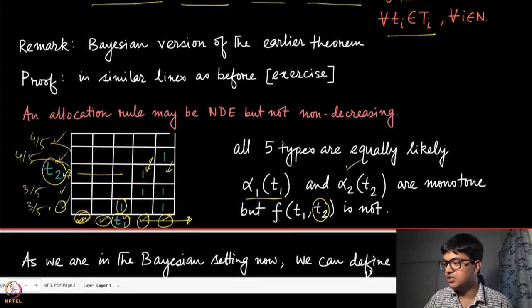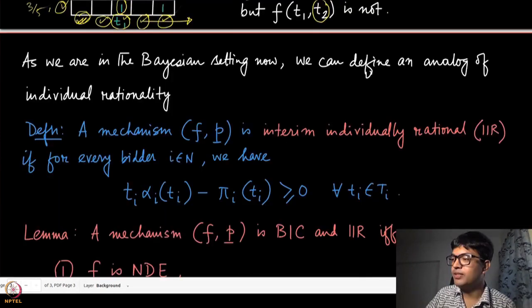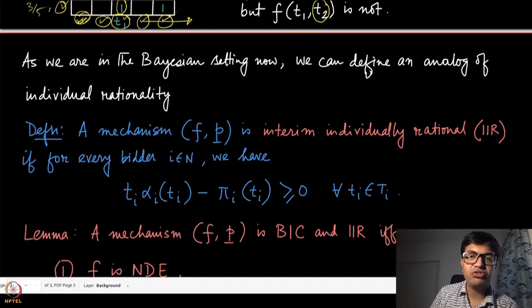However, the allocation rule is not monotone for the underlying f_1(t_1, t_2) or f_2(t_1, t_2). For example, if we fix t_2 at a particular value, player one may not get the allocation for one value of t_1, then get it for the next, and then lose it again — violating the pointwise monotonicity condition. So this allocation rule is NDE but not ND.